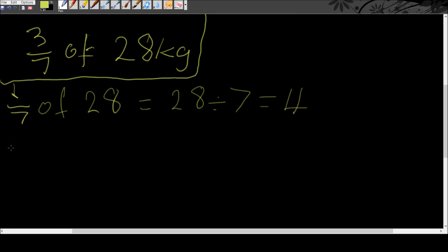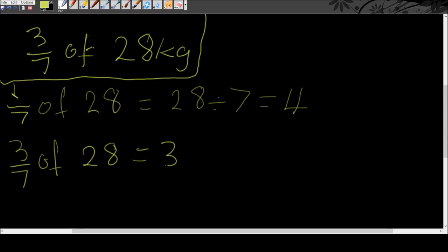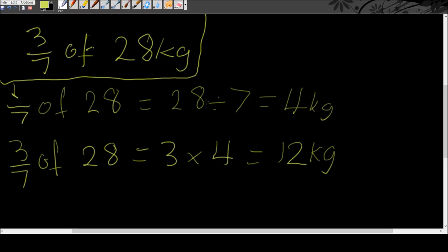Now what do we do next? We want to find three-sevenths. We now know one-seventh equals 4, so in order to find three-sevenths we multiply one-seventh by 3. Three-sevenths of 28 is therefore equal to 3 times 4, which equals 12. And since we're working in kilograms, don't forget the units — so the answer is 12 kg.